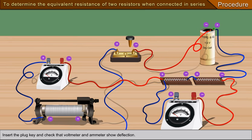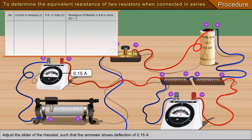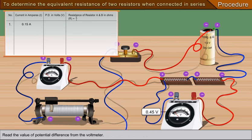Insert the plug key and check that voltmeter and ammeter show deflection. Adjust the slider of the rheostat such that the ammeter shows deflection of 0.15 ampere. Read the value of potential difference from the voltmeter.